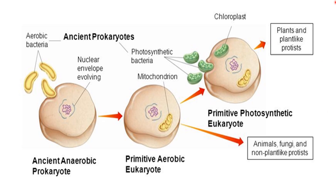It is considered that the bacteria that use oxygen — the aerobic bacteria — when engulfed by the larger prokaryote, evolved and became mitochondria. The bacteria that used sunlight energy to produce their own food material, after being engulfed by the large prokaryotic cells, became chloroplasts.